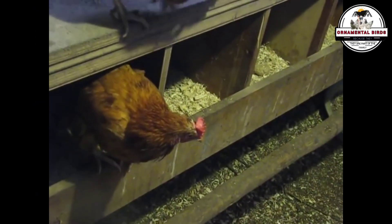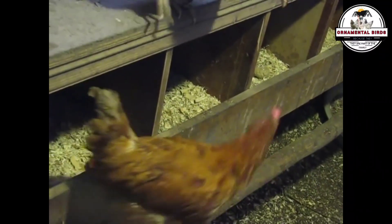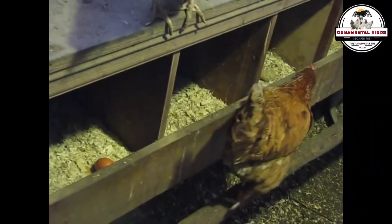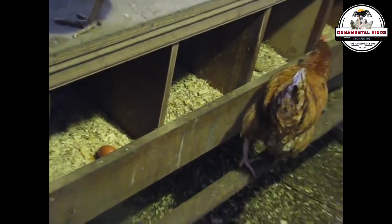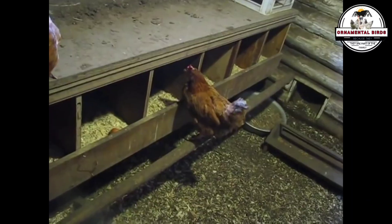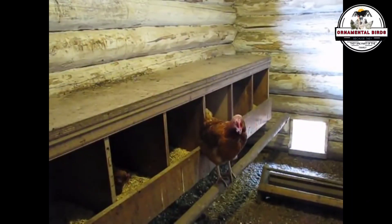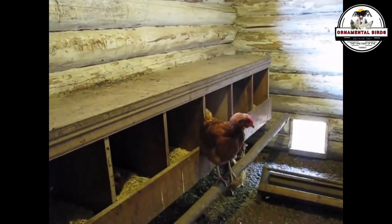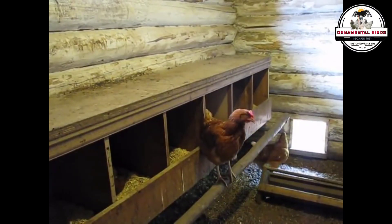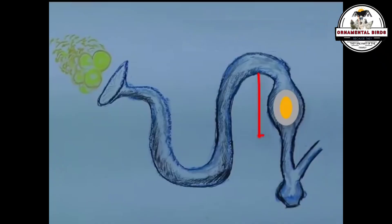The time it takes for a chick to hatch varies depending on the species, but for chickens it is usually about 21 days. A hen's reproductive system is a marvel of biology specifically designed for egg production. The ovary — often described as a cluster of small grapes — is where thousands of microscopic ova reside. However, in each reproductive cycle only a few of these ova will begin to mature, released sequentially one at a time into the oviduct.